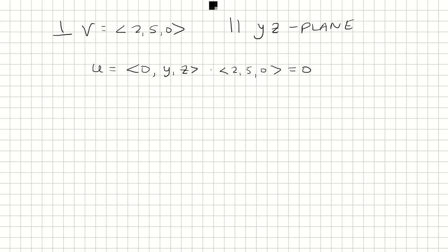If I do the dot product, I get 0 times 2 plus y times 5 plus z times 0 equals 0. That leaves 5y equals 0, so y has to be 0.